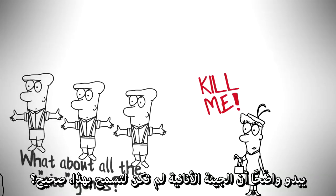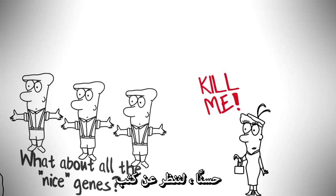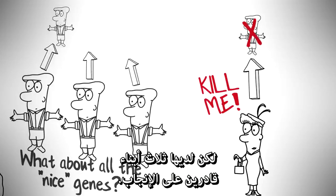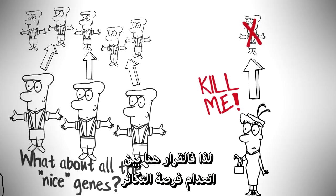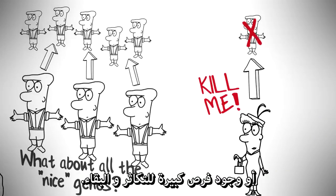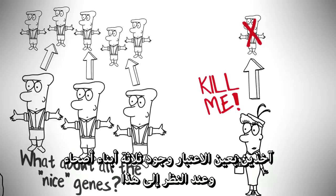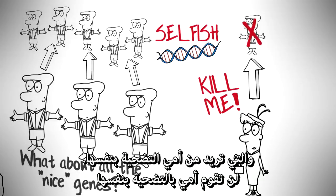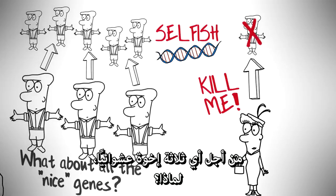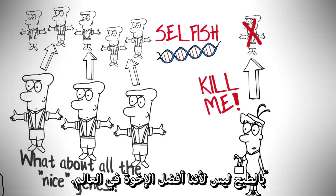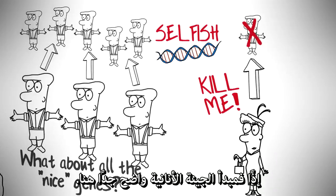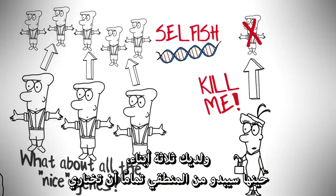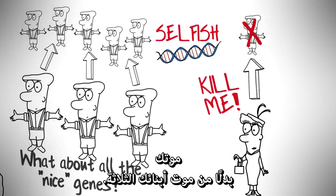A selfish gene is obviously not going to want that, right? Well, let's take a closer look. My mom's over 50 now, so she's not going to be reproducing anymore. She does have three sons, however, who are all capable of reproducing. So the decision is between absolutely no chance of reproduction or a very high chance of reproduction and survival considering three healthy sons. It now makes perfect sense for a gene to be selfish and want my mom to sacrifice herself. She's not going to sacrifice herself for any random three brothers — they don't carry her genes. When you're a 50-year-old woman with three sons, it makes perfect sense to pick your own death over the death of your three sons.